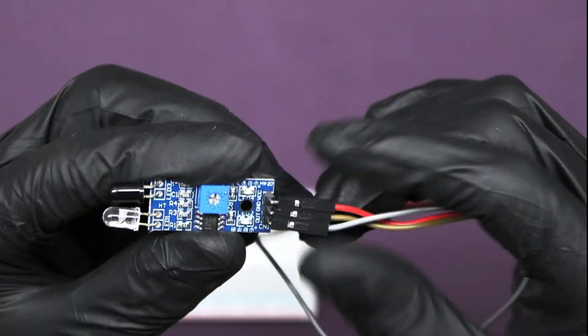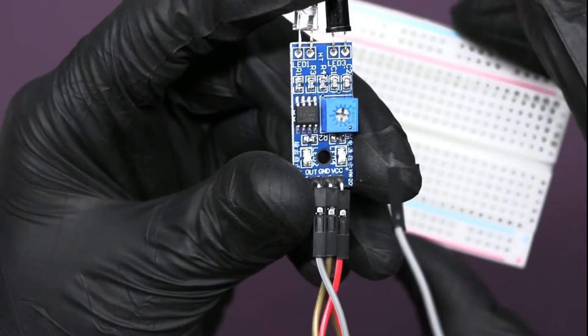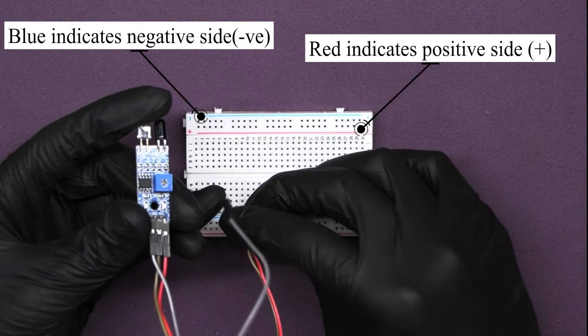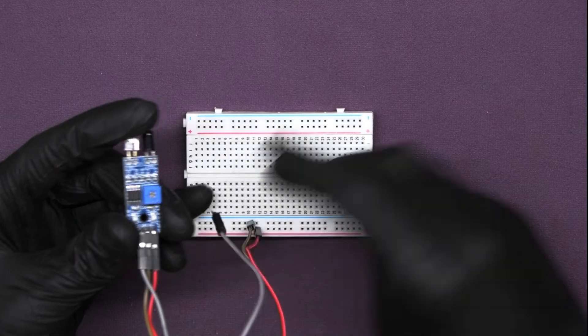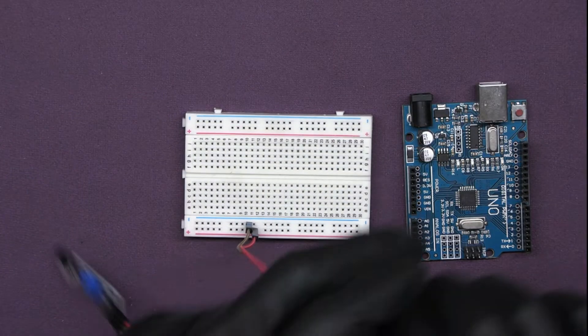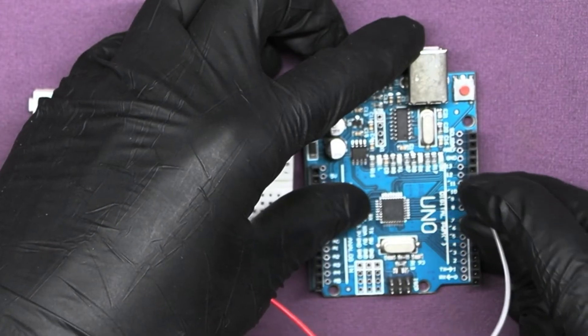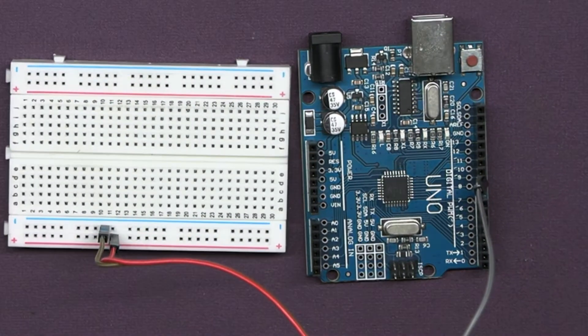Then, insert the VCC wire to the power bus of the breadboard. Insert GND wire to the ground bus of the breadboard. At last, insert the out wire of IR to any digital Arduino pin like pin 9.